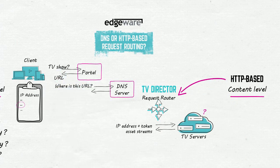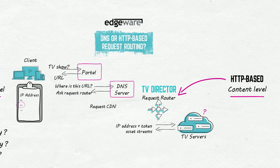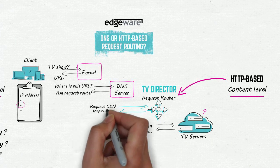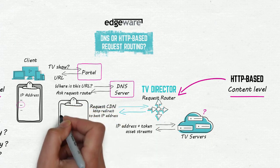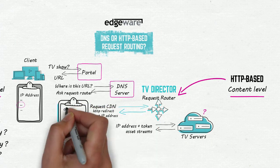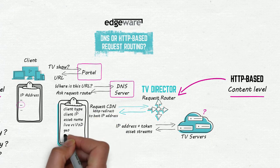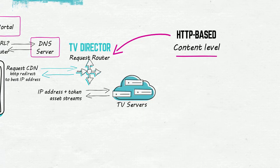It knows which server has which content and whether that server's available. It can also enforce policies and redirect requests based on more detailed information, such as client type, asset names, type of content, and so on. Requests are sent to the best server, delivering a glitch-free viewing experience.